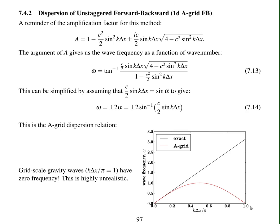So what does this mean when k delta x over pi equals 1? This is a grid scale wave.